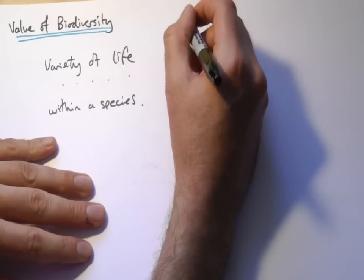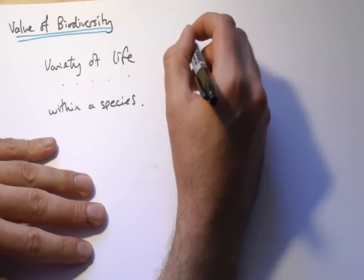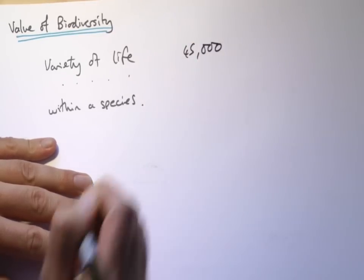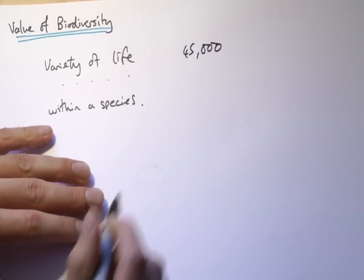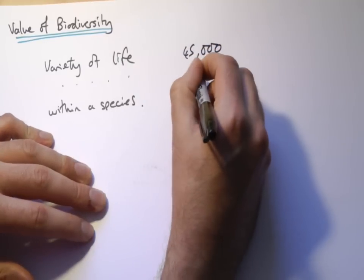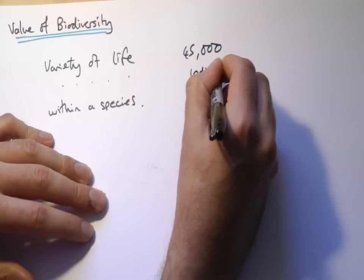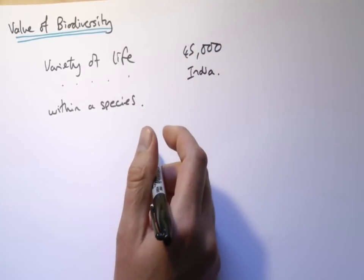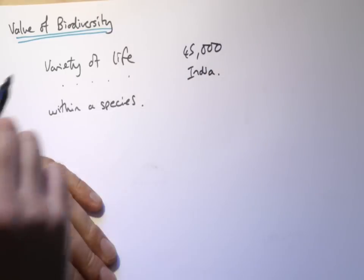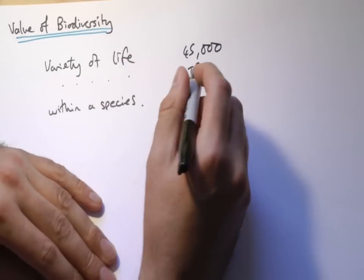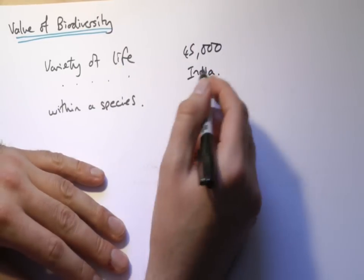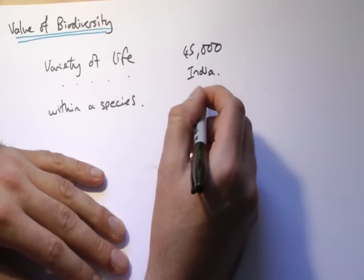If you go back a couple of centuries ago, estimates put 45 to 50 thousand tigers in the population in India. Mainly through hunting, those numbers shot really far down — within 150 years it was just a few thousand.